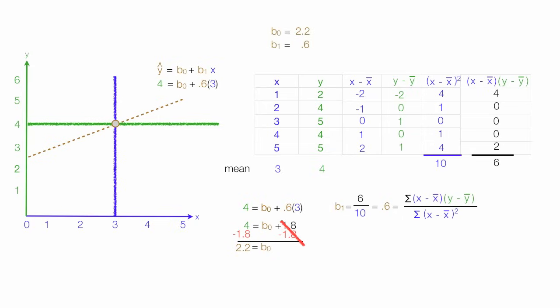b1 is equal to 0.6, which is also the slope. And so y-hat is equal to 2.2 plus 0.6 times x.